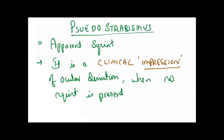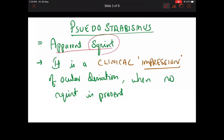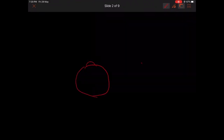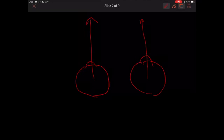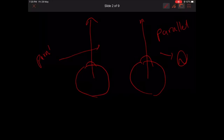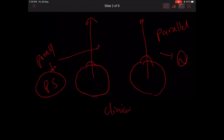What is pseudostrabismus? It is an apparent squint. The definition is: it is a clinical impression of an ocular deviation when there is no squint present. For example, in the primary gaze, the visual axis is parallel when your object of interest is at infinity. This is normal, and this parallel visual axis is also present in pseudostrabismus. But for the outside observer or clinician before examination, it appears to have an apparent squint, even though the visual axis is parallel.